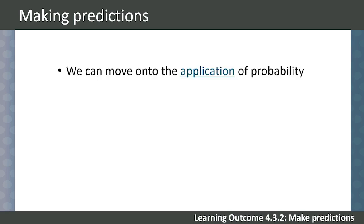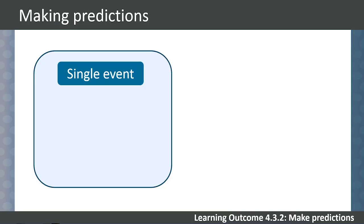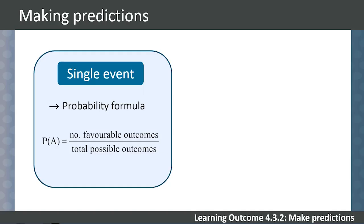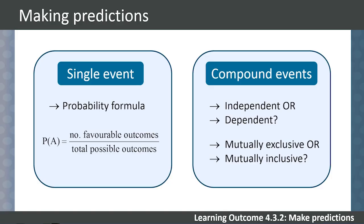Now that your students have some terminology under their belts, we can move on to the application of probability. We use our understanding of probability to make predictions about future events. For simple or single probability, we calculate the probability of an event using the formula introduced earlier: probability of A equals number of favorable outcomes divided by total possible outcomes. For compound probability, we need to consider whether events are independent or dependent, mutually exclusive or mutually inclusive. A chart can help guide students for applications involving compound probability.